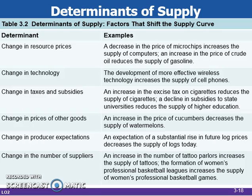If technology improves, the increased efficiency cuts costs and supply increases. If we adopt or use less efficient technology, supply decreases. If taxes are increased on a specific product, supply decreases. If taxes are decreased or eliminated on a specific product, supply increases.